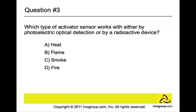Number three: Which type of activator sensor works with either photoelectric optical detection or by radioactive device? The answer is C — smoke activator sensor. Others use both detection methods to increase sensitivity to smoke. Sensitivity alarms can be used to detect and deter smoking in areas where it is banned, such as toilets and schools.